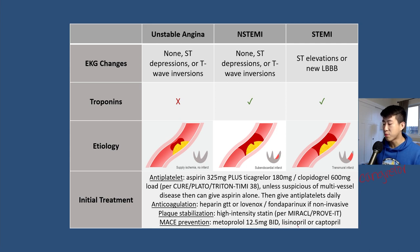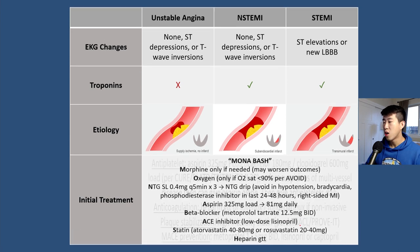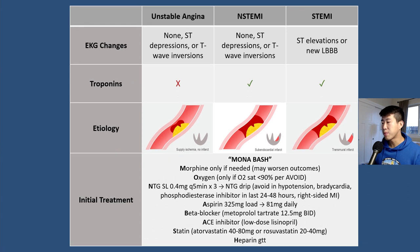One framework some people use is the acronym MONA-BASH: morphine, oxygen, nitroglycerin, aspirin, beta blocker, ACE inhibitor, statin, and heparin. This is still a useful framework, though there are a few caveats.